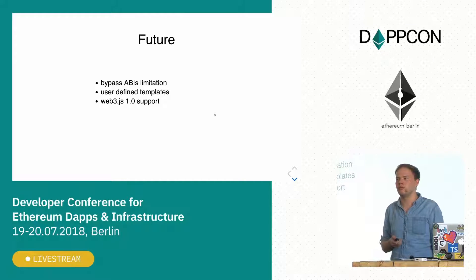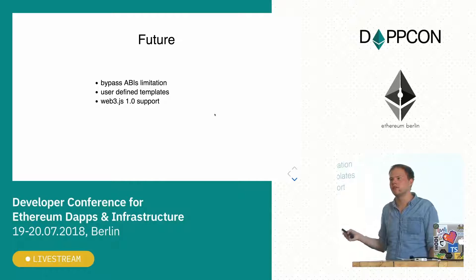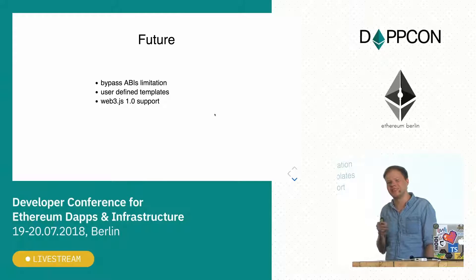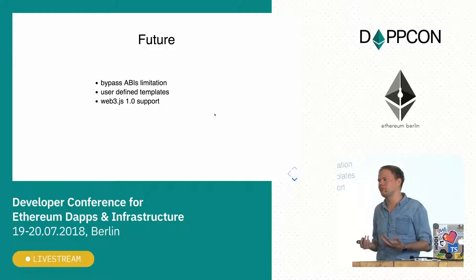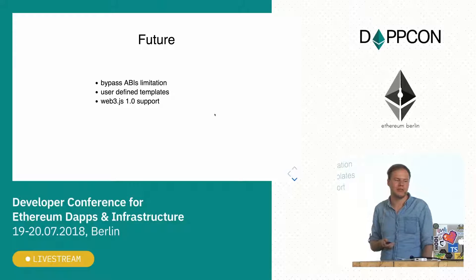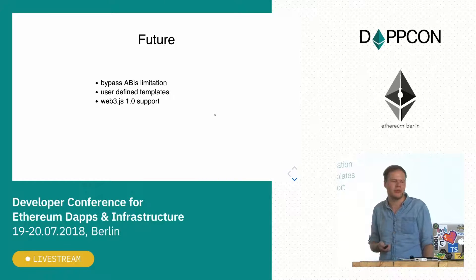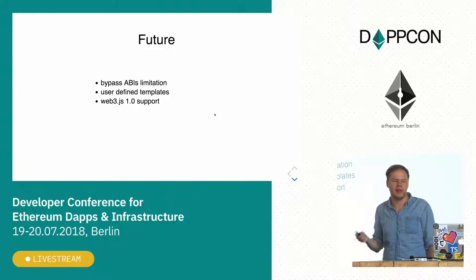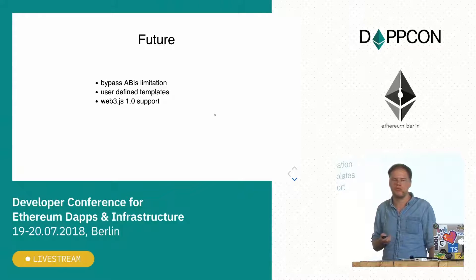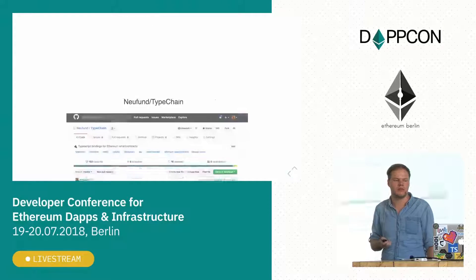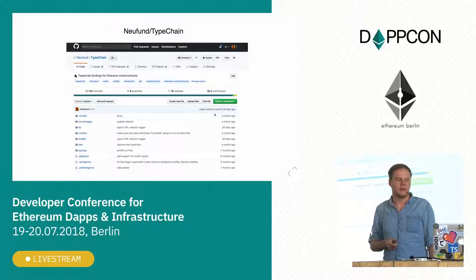Currently TypeChain uses web3 version 0.20-something because it was the most stable version we used. Web3 1.0 is on the horizon and we should probably migrate. But if we allow user-defined templates, users could write a template to use web3, ethers.js, or whatever suits them.